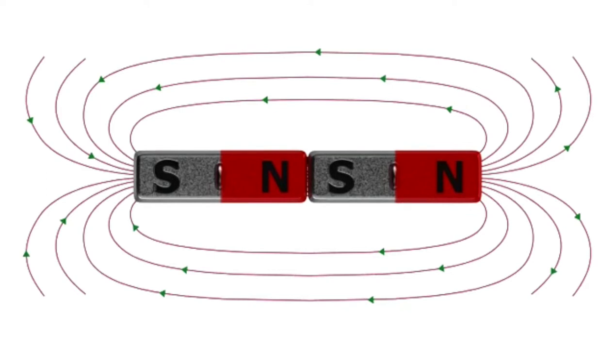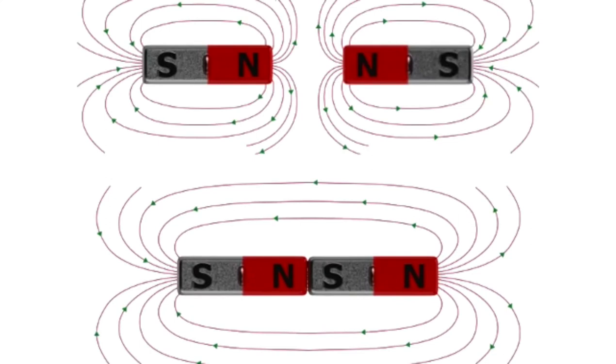When unlike poles of a magnet are lined up end to end, their combined forces create a unified magnetic field and thus behave as a single magnet.